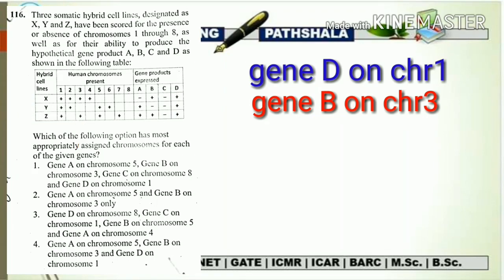Now let's move to gene C. From the data, gene C is absent — it is not present in any of the hybrid cell lines. Gene C is neither present in X, nor in Y, nor in Z. So we just have to eliminate gene C from our explanation.